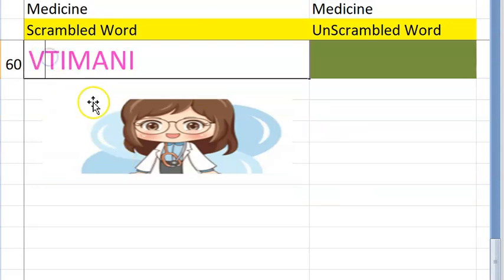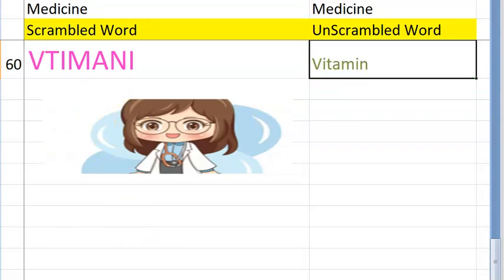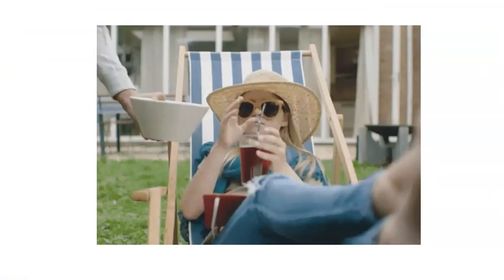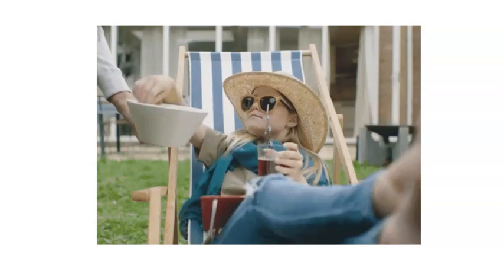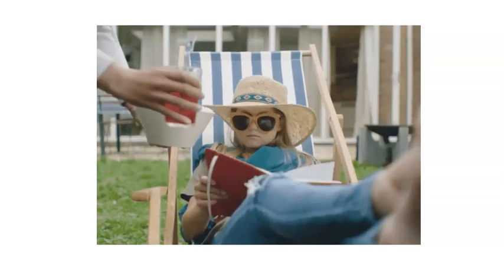The sixtieth and last one — it starts with V, it is a micronutrient — vitamin. Very good! You earned it — you have solved 60 scrambled medicine words. Great, bye!